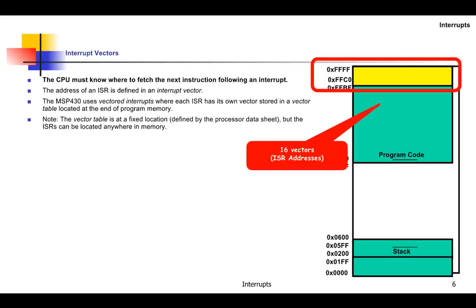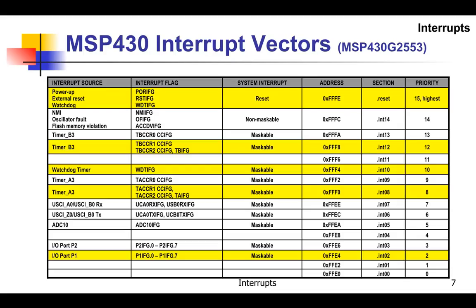The MSP430 G2553 has 16 interrupts and 16 vectors. This processor is not our specific processor, but it's similar — a simpler version. Our processor has these interrupts as well as some additional ones, with different section numbers and addresses. You can find the data for our processor in the datasheet. This information is also located in a special file unique to each processor that Code Composer Studio uses to set sections.